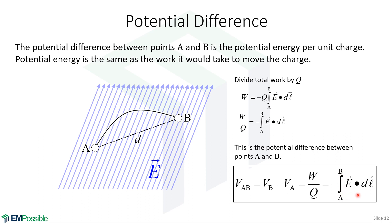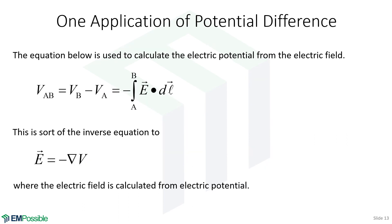We integrate from A to B this E dot dL — don't forget the negative sign. This equation gives us the electric potential V given the electric field E, which is the inverse of what we learned earlier: E equals the negative gradient of V. These two equations are inverses of each other.